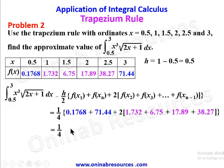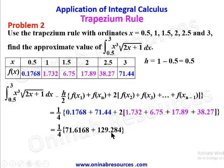Simplifying: the first bracket sums to 71.6168, and the middle values multiplied by 2 give 129.282. Adding these and dividing by 4 gives the final answer of 50.2252. That's the end of the solution to problem two and the highest we can take in this tutorial.